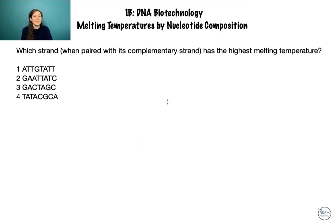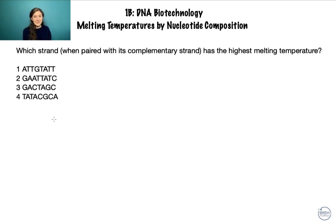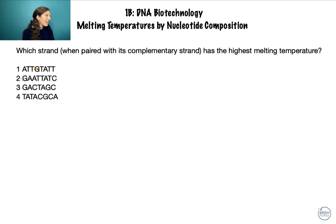Now let's do an MCAT-style problem. These strands might appear in the answer choices or in a passage, and you'll be asked which strand has the highest melting temperature when paired with its complementary strand. The simple approach: count the GC pairs. Strand one has one GC, strand two has two GC, strand three has four GC, and strand four has three GC.